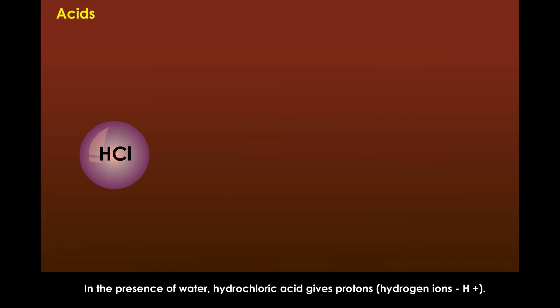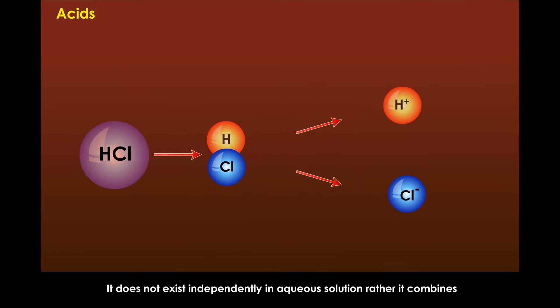In the presence of water, hydrochloric acid gives protons, hydrogen ions H positive. It does not exist independently in aqueous solution. Rather, it combines with water molecules to form hydronium ion and anion chloride, Cl-. Hydronium ion is nothing but a hydrated hydrogen ion.